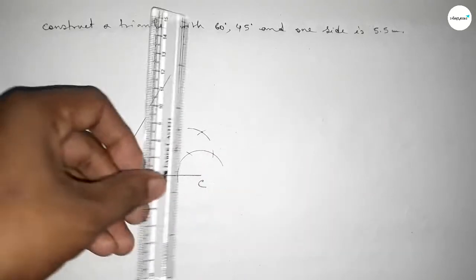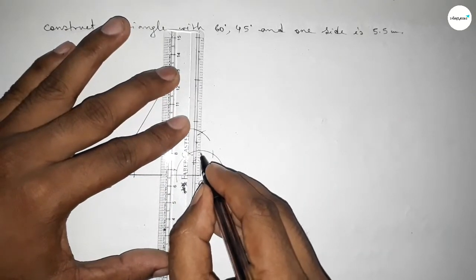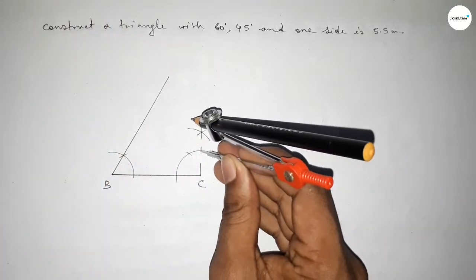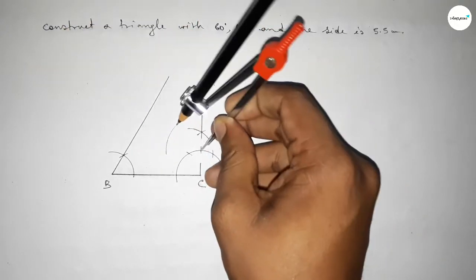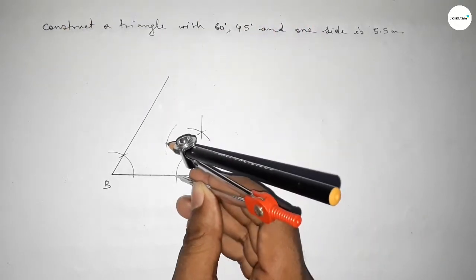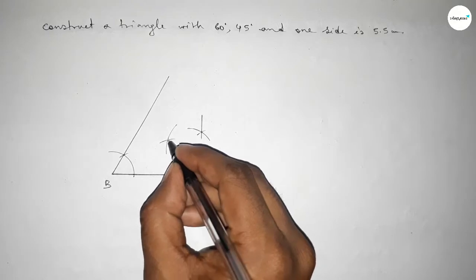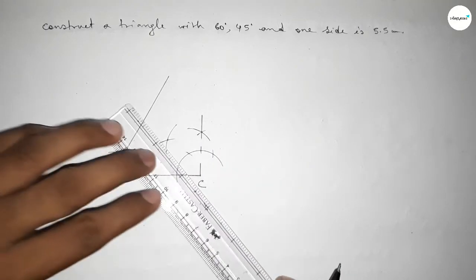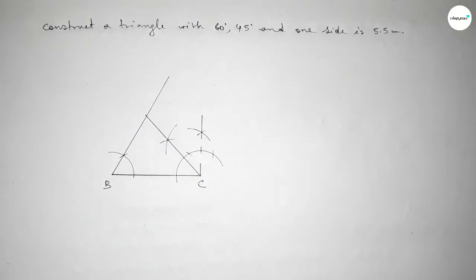Cutting here so both curves intersect at a point — joining this line gives a 90 degree angle. Now to bisect this angle: putting the compass and taking greater than half, drawing an arc, then putting the compass at the other point and cutting here. Both curves intersect, and joining this gives us the 45 degree angle.